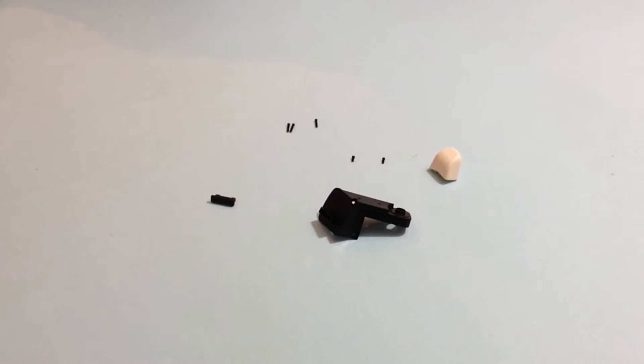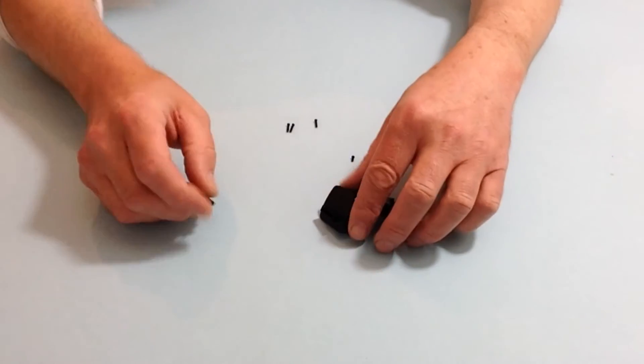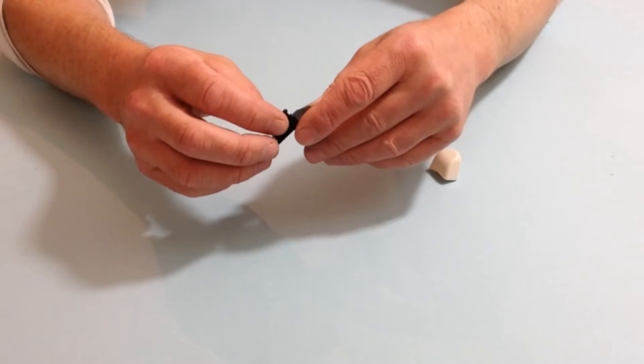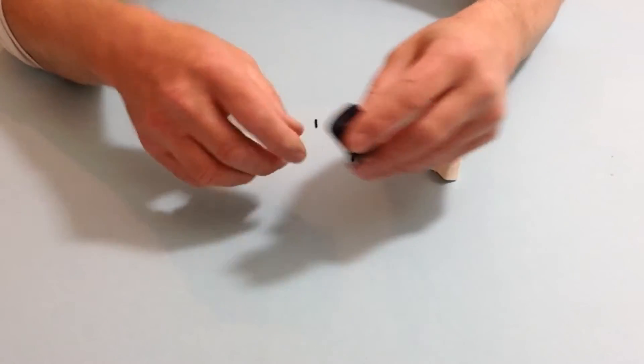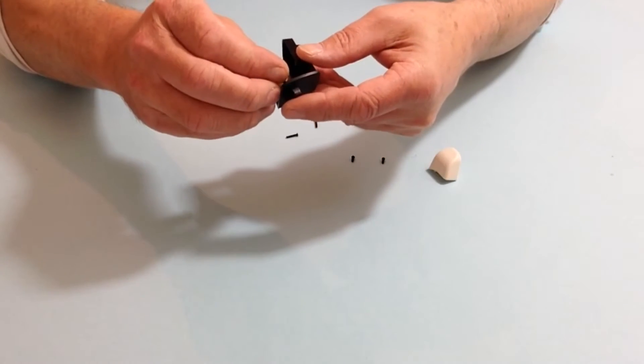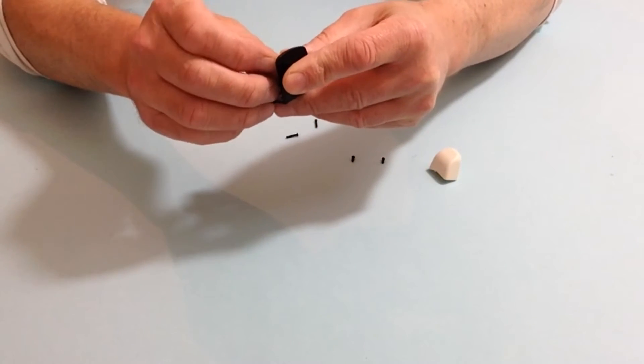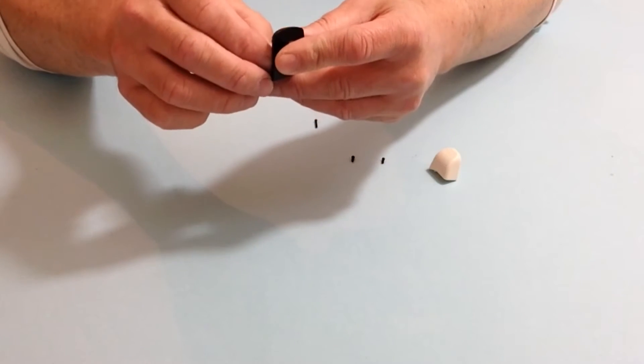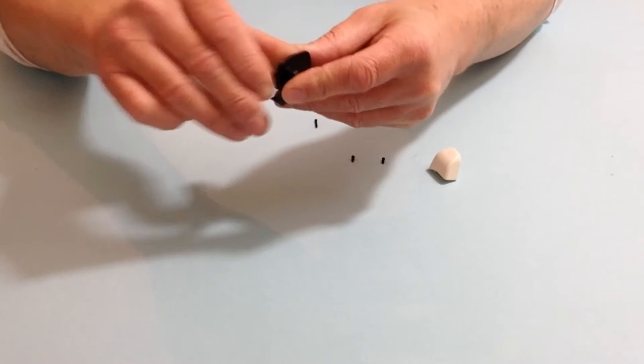In stage 15 we are going to be assembling Robbie's left forearm. Align the forearm frame and the finger mount as we did before, placing that inside. Then take two of the longer screws, place those in the back like so, and with a screwdriver tighten those up.